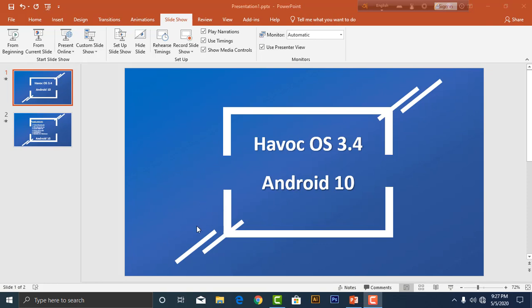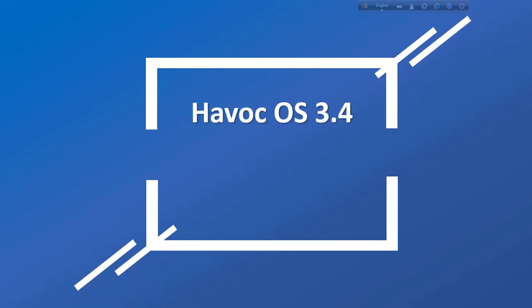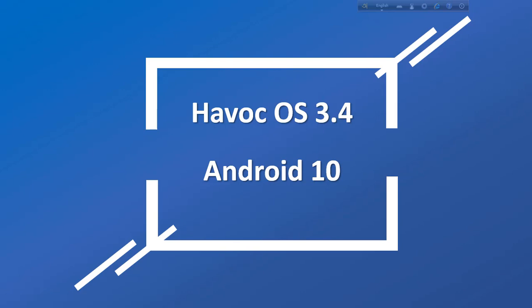Hello, how are you guys? Today I will show you HavocOS 3.4 Android 10 on the Xiaomi Redmi 6. I'll guide you on how to install it. HavocOS 3.4 is an official Android 10 ROM with a very smooth UI.